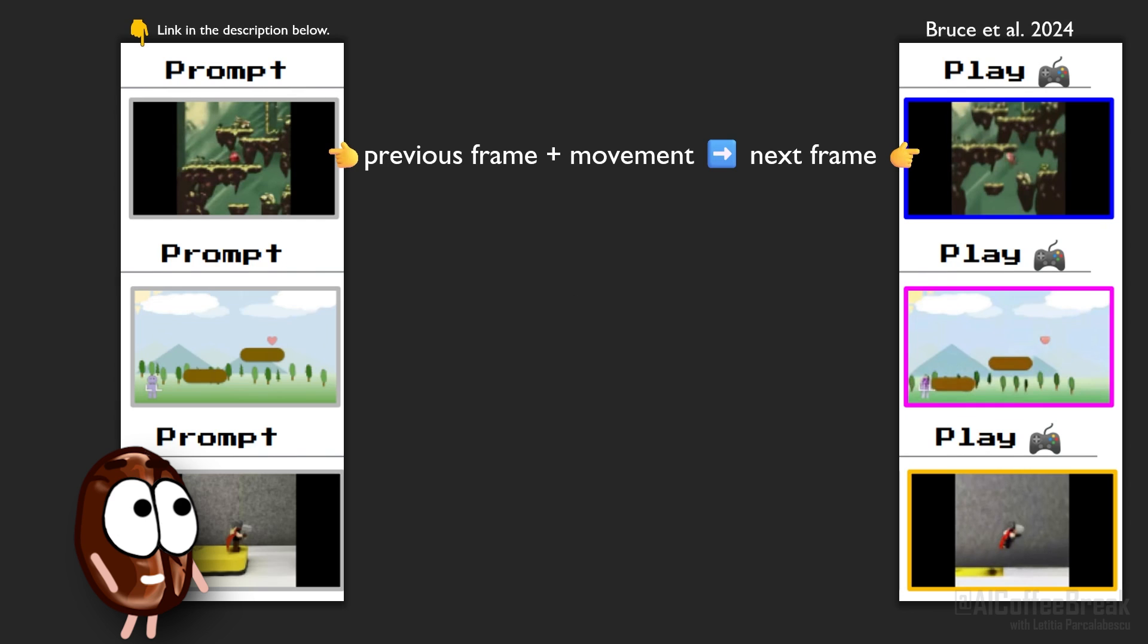Genie trained on over 200,000 hours of gaming videos from the internet. It has 11 billion parameters which is relatively small for today's standards, but it should be small since it's supposed to generate a likely visual continuation on a frame by frame basis. At inference the model takes the action of the user and the previous frames to generate the next frame.